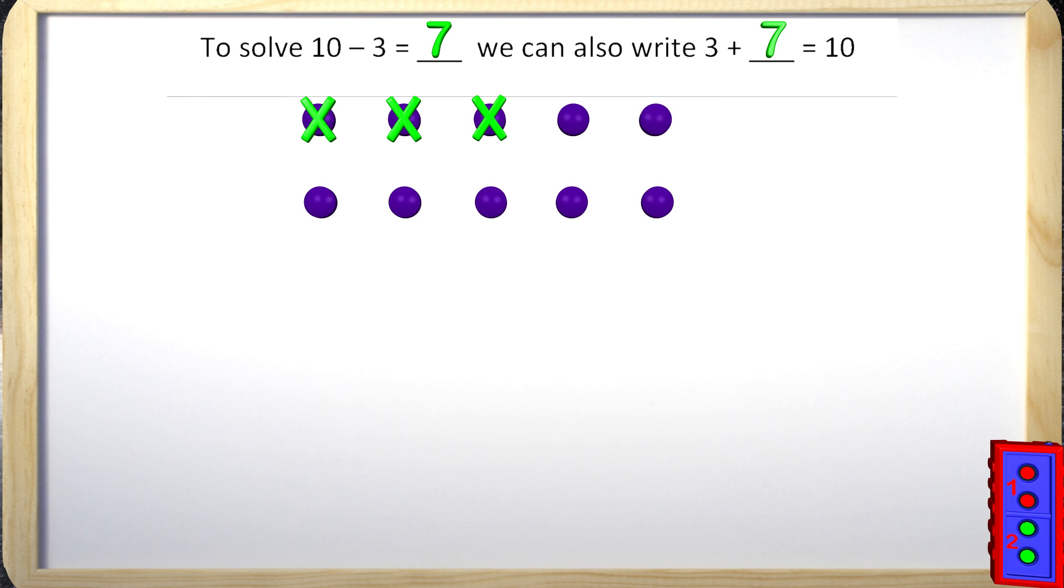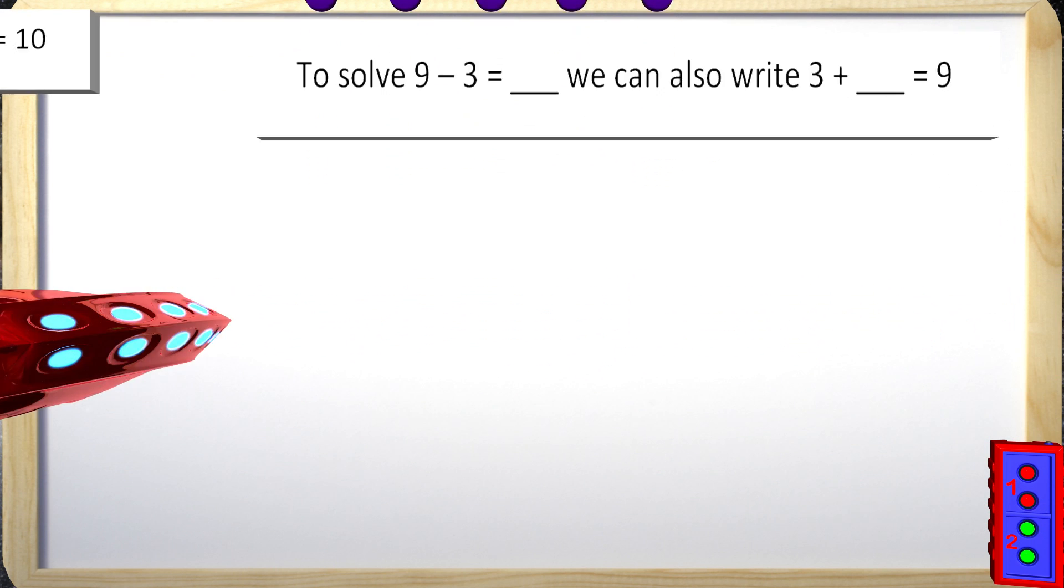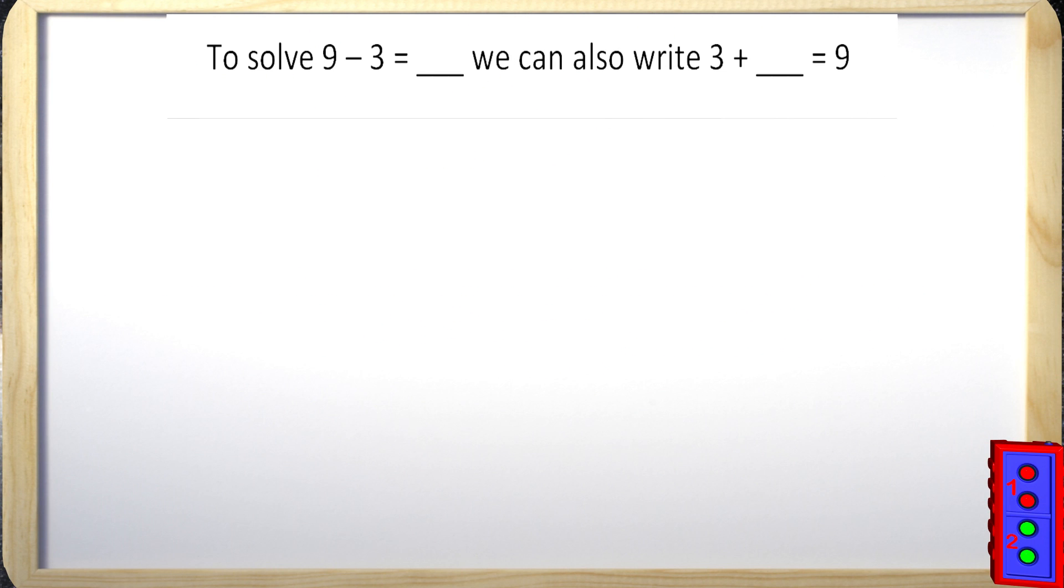Let's look at another question to fill my ship's power. The problem says, to solve 9 subtract 3 equals blank, we can also write 3 plus blank equals 9. To find the answers to the blank, we will use a math mountain this time. Why don't you try this on your own for a minute and then come back.